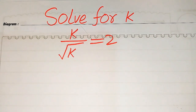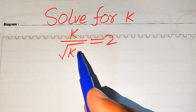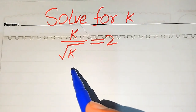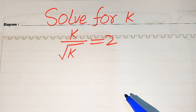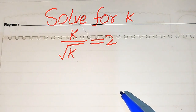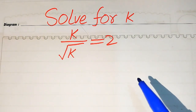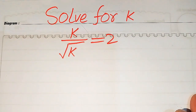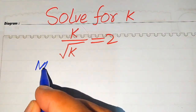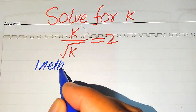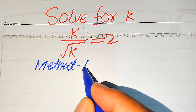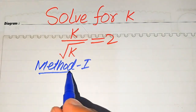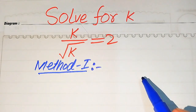Hello everyone. How to solve this problem for the values of k, if we have k divided by square root of k equals 2, and we solve this problem for all the values of k. First we find all the roots of this equation, and at the last we will verify which of the roots are solutions and which are extraneous roots. We will solve this problem using two methods.